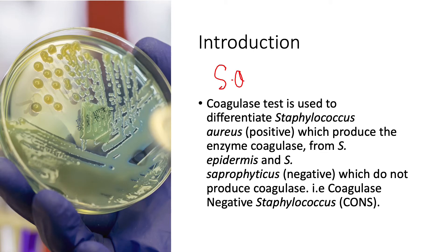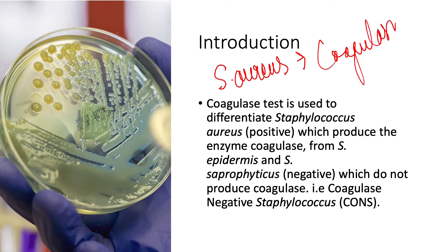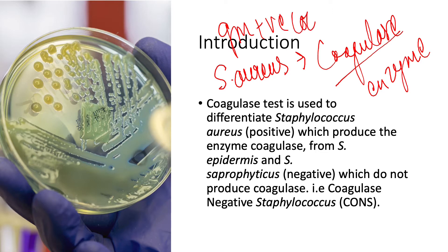Staphylococcus aureus is responsible for the production of the enzyme called the coagulase enzyme. We need to determine whether the bacteria produces the coagulase enzyme or not. If there is a gram-positive cocci in clusters, it is considered a Staphylococcus species, and we need to determine whether it produces the coagulase enzyme. If it produces the coagulase enzyme, it is Staphylococcus aureus.